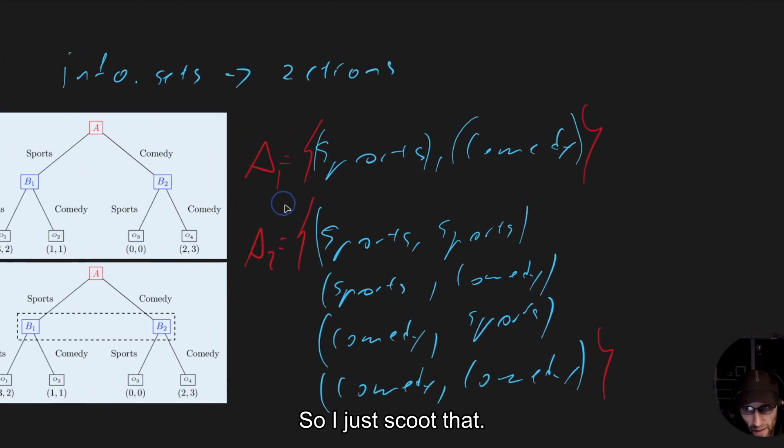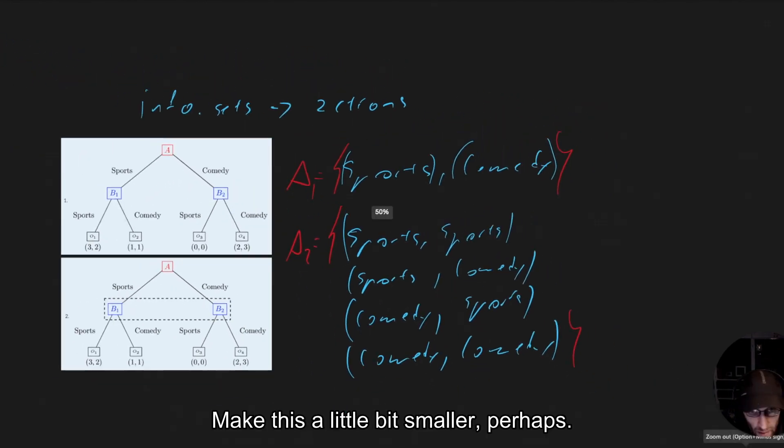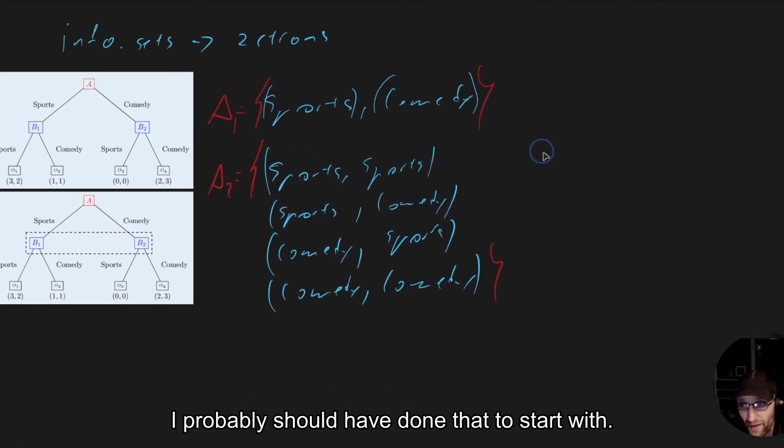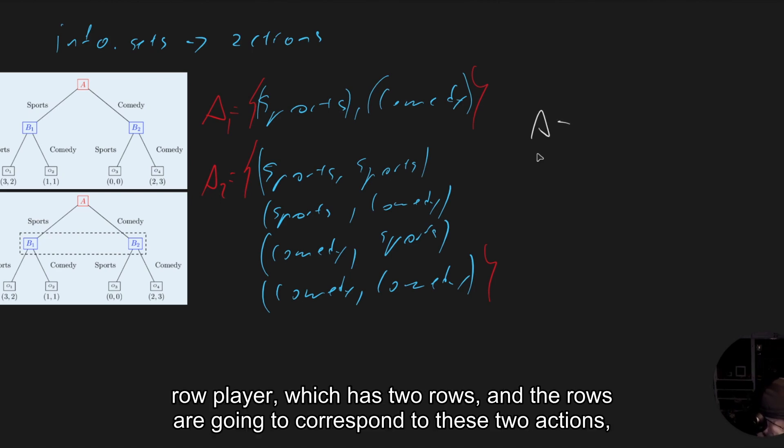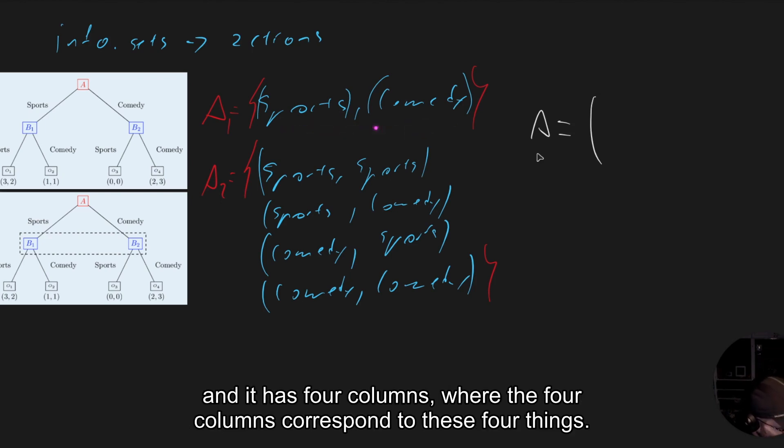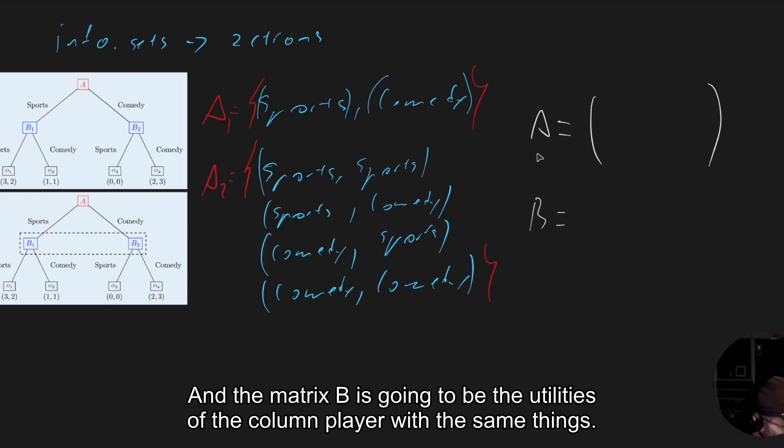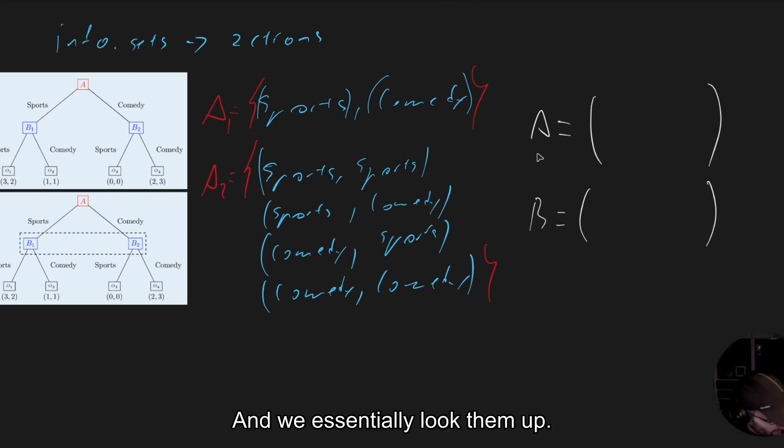And so now we can say, in this case, we have the game, the matrix A for the role player, which has two rows and the rows are going to correspond to these two actions. And it has four columns where the four columns correspond to these four things. And the matrix B is going to be the utilities of the column player with the same things. And we essentially look them up.